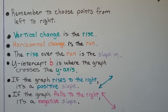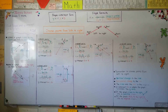Remember to choose points from left to right for point 1 and point 2. The vertical change is the rise, the horizontal change is the run, and rise over run is the slope m. The y-intercept b is where the graph crosses the y-axis. If the graph rises to the right, it's a positive slope; if it falls to the right, it's a negative slope. So now you know you can just look at a graph, tell if the slope is positive or negative, and count the rise and the run. I hope you have a great day — see you next time. Bye!